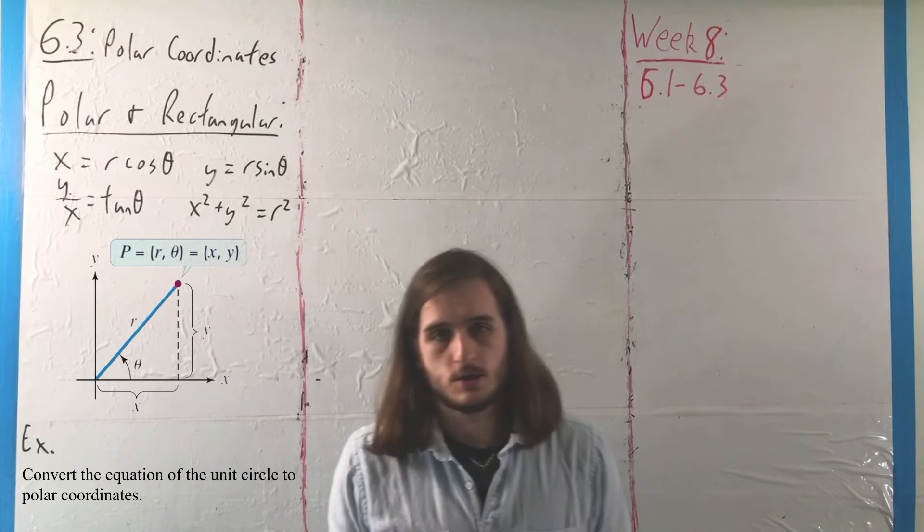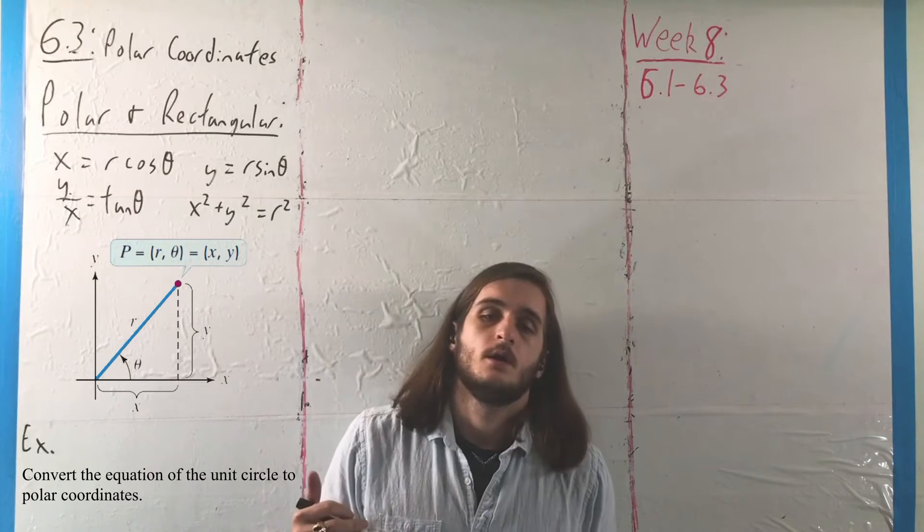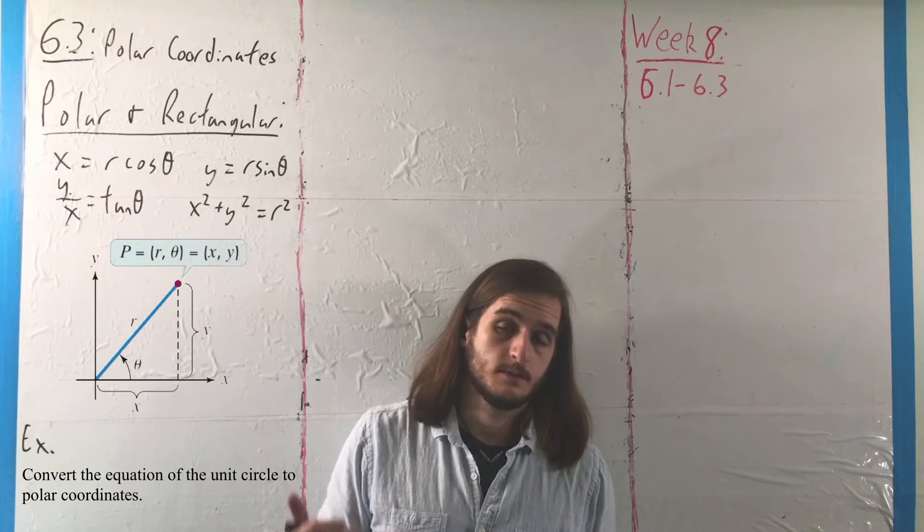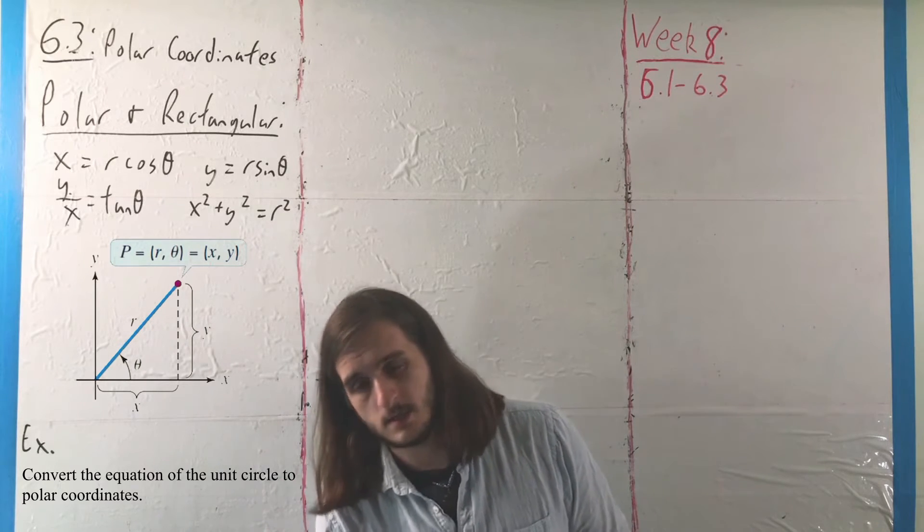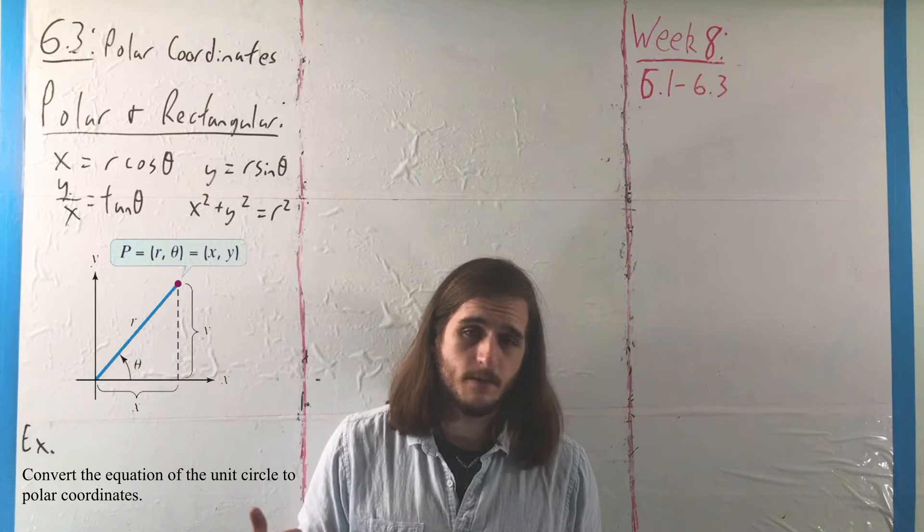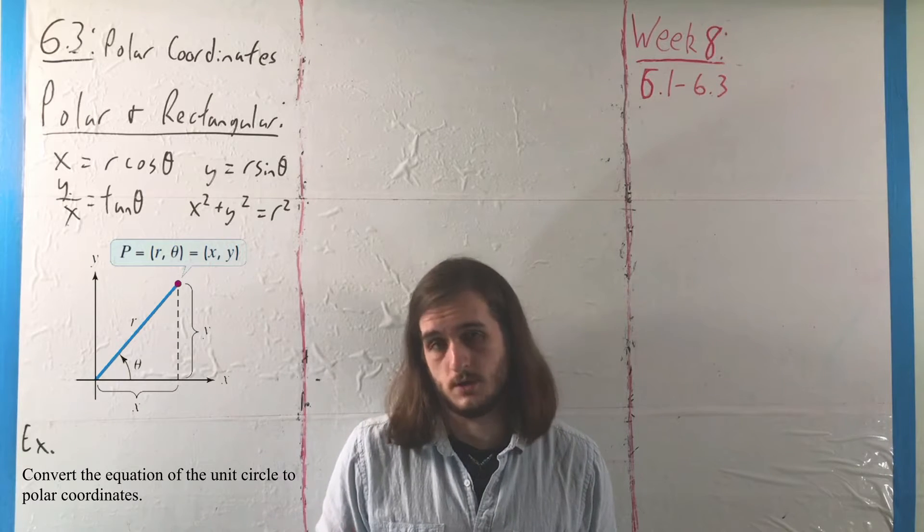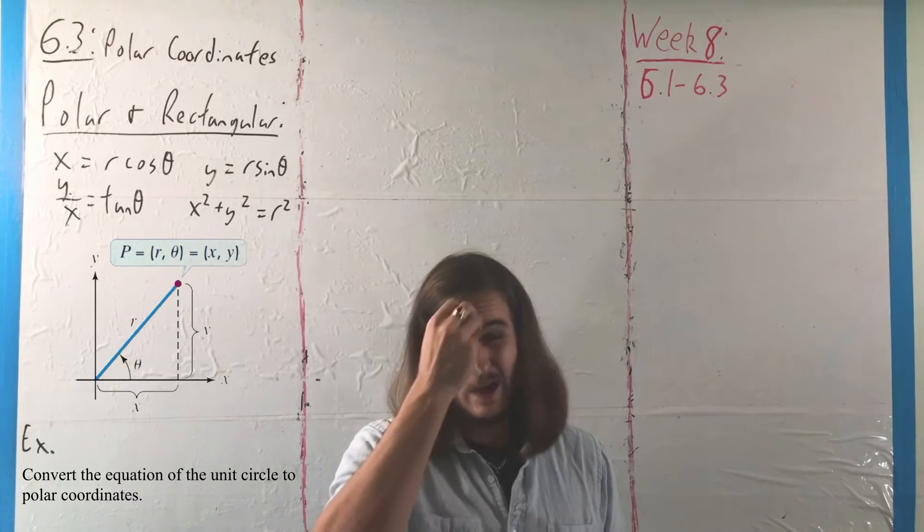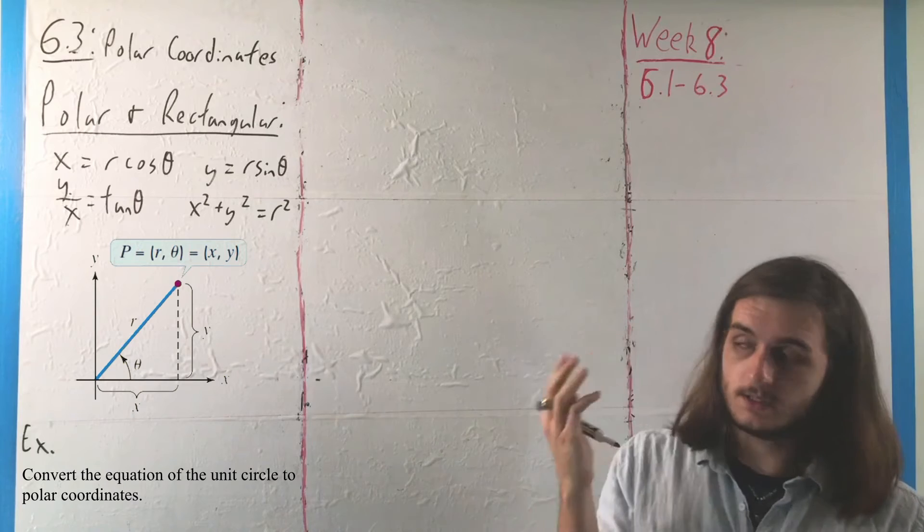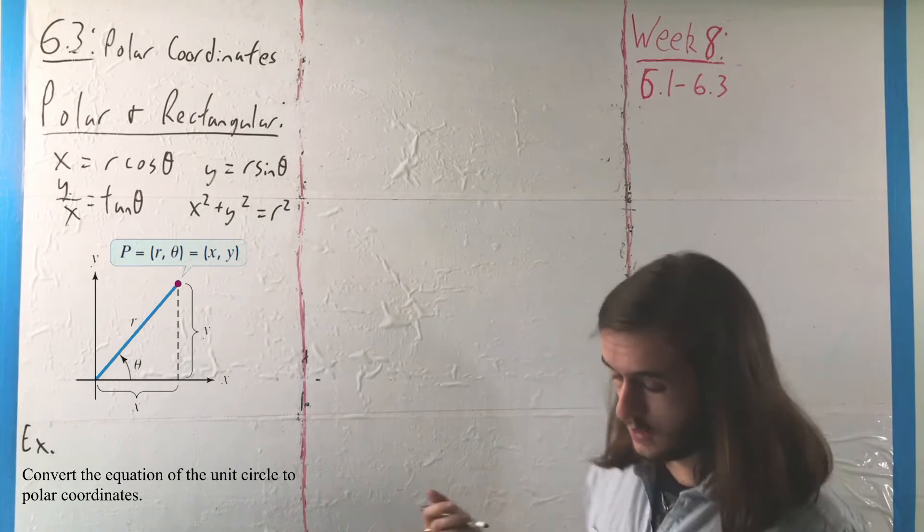Generally when we're trying to go from rectangular to polar, we like to get this in terms of something like a function where we get R written as a function of theta, but this isn't going to quite happen in this case for reasons that we'll be able to see as we're going.